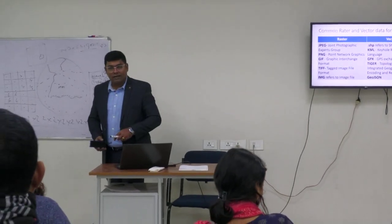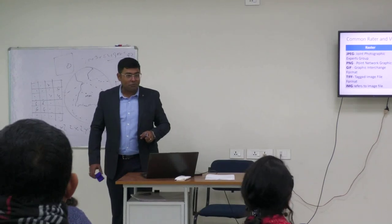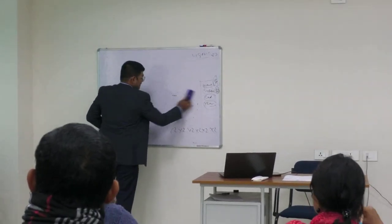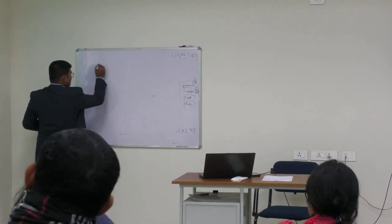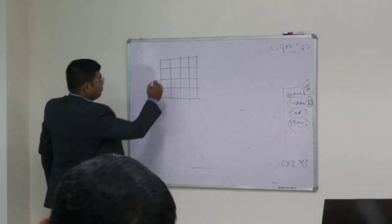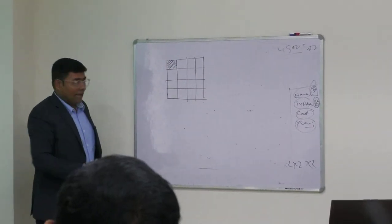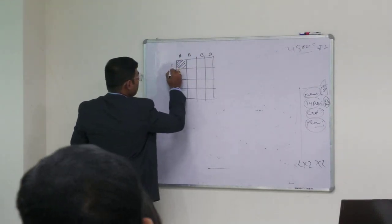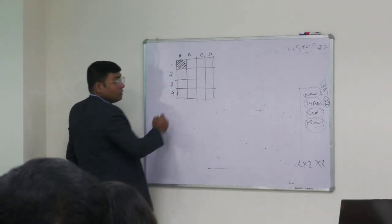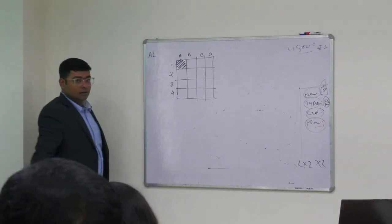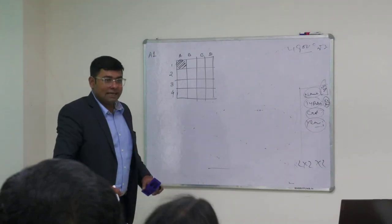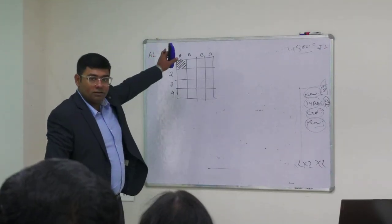Now, let me show a basic difference between raster and vector data in terms of their origin. As we have defined, raster data is an array of pixels. To refer to a particular pixel in an array with columns a, b, c, d and rows 1, 2, 3, 4 — that pixel would be referred to as A1. So for raster data, the origin is at the top-left.